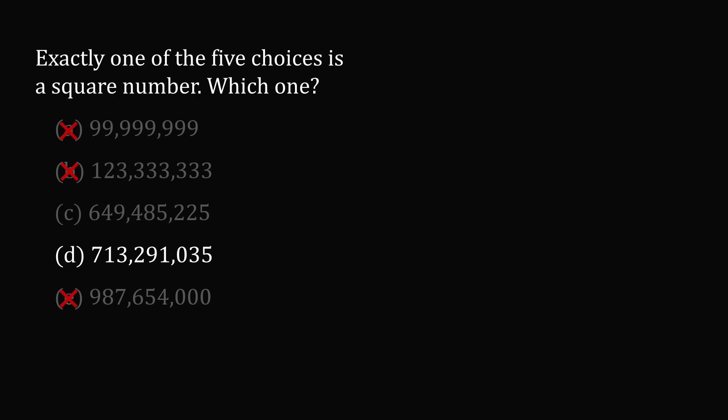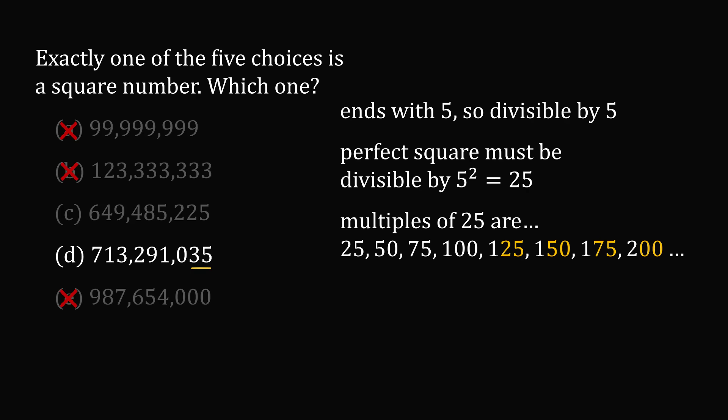Now let's consider option D. The last two digits of this number are 35. What can we say about this number? Well, we know the very last digit is a 5, so it must be divisible by 5. We have some factor of 5 in the prime factorization. If this is a perfect square, we must have 5 to some even power. Now 5 squared is equal to 25, so we know that if this is a perfect square, it must be divisible by 5 squared, which equals 25. So let's look at multiples of 25.